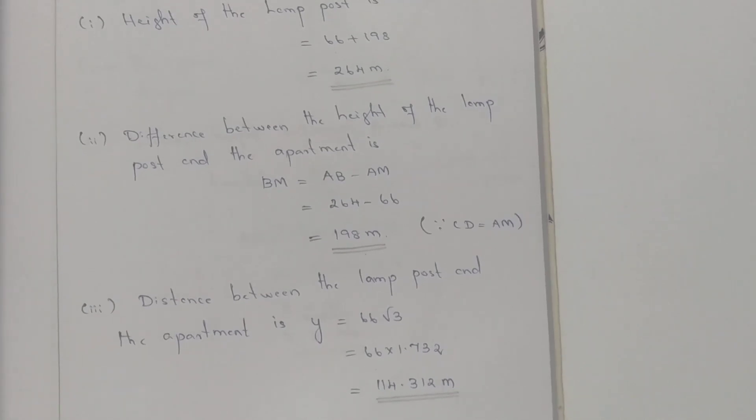First, the height is 66 plus X equals 264 meters. Next, the difference between the heights is X equals 198 meters. And Y is the distance between the lamp post and the apartment.